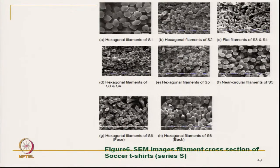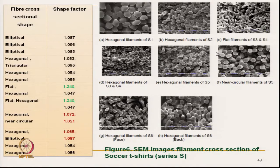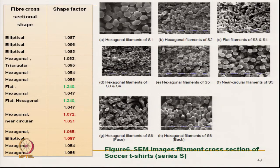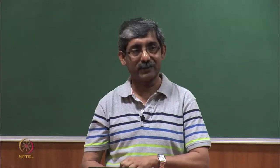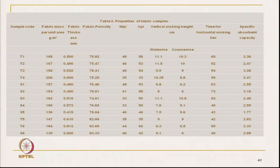These are scanning electron microscope images of fibres used for soccer — series S. Similarly, elliptical, hexagonal, and triangular different shapes of polyester filaments are being used. We have also seen that fabric structures are mainly knitted — either interlock, plated, or double layer structure — and these are their different characteristics.